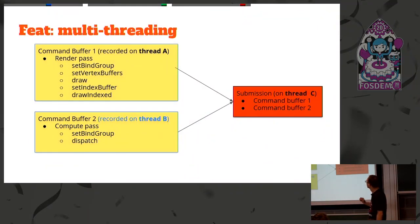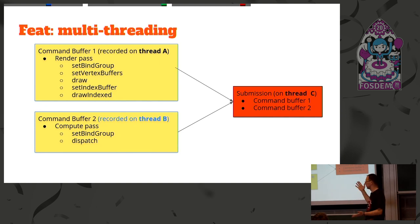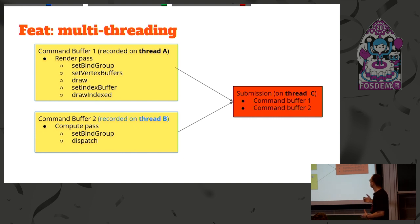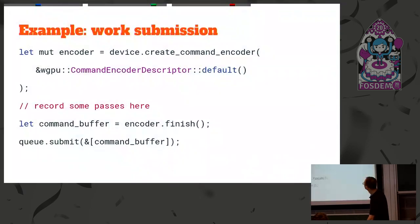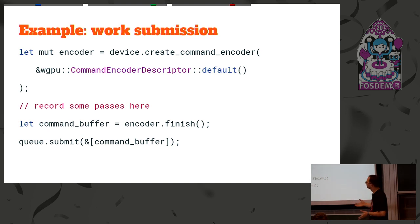Multi-threading is something all the new APIs support. In this example, three threads are involved. On the first thread we record a big render pass. On the second thread we record some compute work. We don't know exactly when it's going to be executed — we just tell it what to do — but then we send it to the thread that owns the queue and say 'submit first, then second.' That's where the order is established. In code: you create an encoder, the encoder has compute or render passes, you finish the encoder, get a command buffer, and submission takes an array of them.